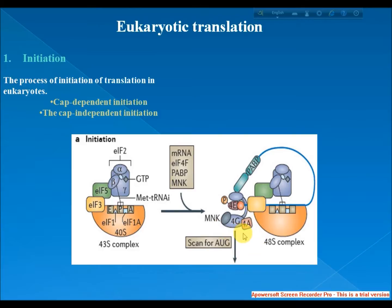eIF4G is a scaffolding protein directly associated with both eIF3 and the other two components. eIF4E is the cap-binding protein — it is the rate-limiting step of cap-dependent initiation and is often cleaved from the complex by some viral proteins to limit the cell's ability to translate its own transcripts, a method of hijacking host machinery in favor of viral cap-independent messages.